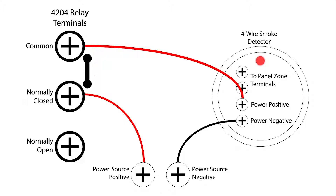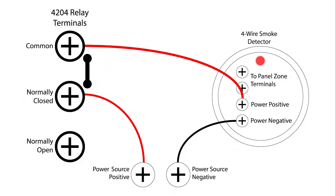That's all there is to programming a smoke detector reset. When your fire zones are in alarm, entering your code and off twice will cause the relay to open, momentarily breaking power for 8 seconds, then restoring power to your smoke detector. That's all for this video. Thanks for watching.